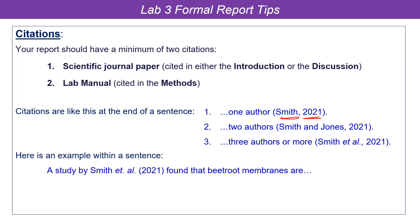If there are three or more authors, it's the first author followed by 'et al.' Notice that 'et al.' is in italics and has a period at the end of 'al' because 'al' is an abbreviation. Make sure you have all that punctuation correct.